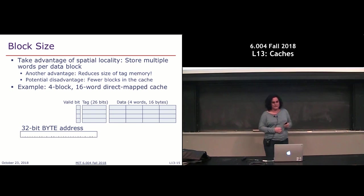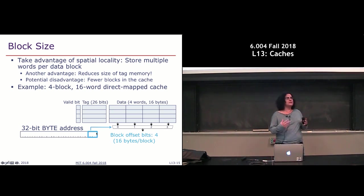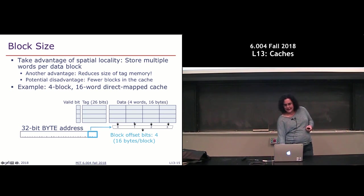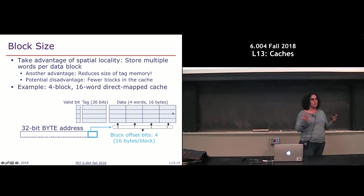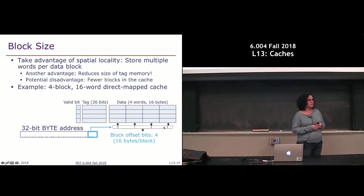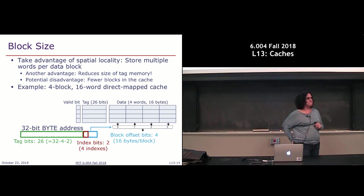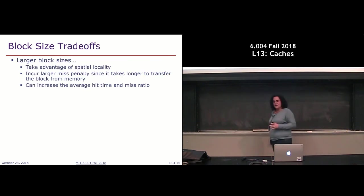In a cache with a block larger than one word, the addressing scheme changes. The bottom two bits continue to be zero for word alignment, but we now use two more bits to select which of the four words within a line we're referring to — bits two and three go to a multiplexer that selects one of the four columns. The rest remains the same: we have index bits to select the row, and the remaining bits are the tag bits.